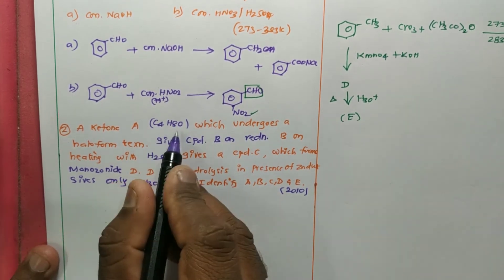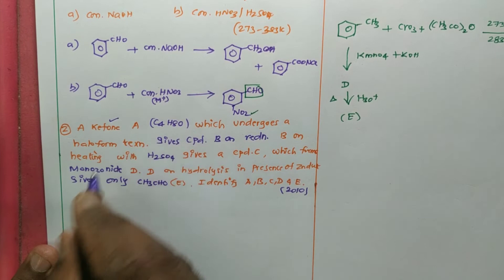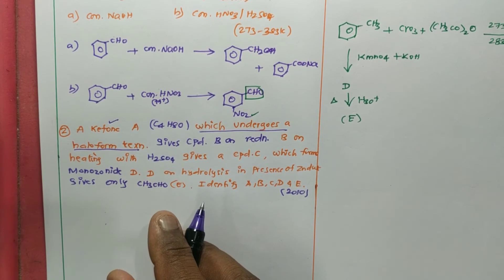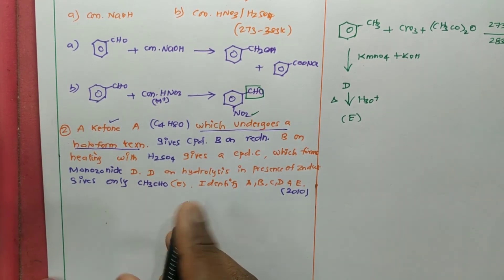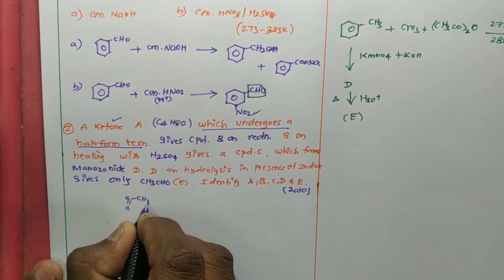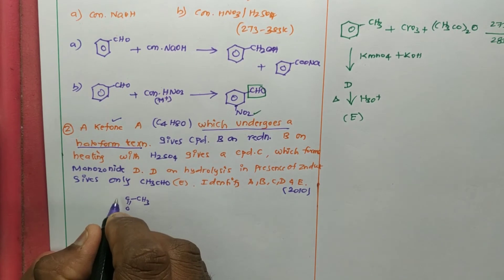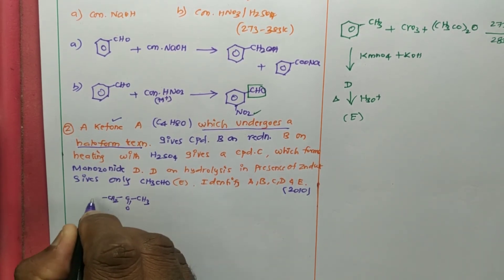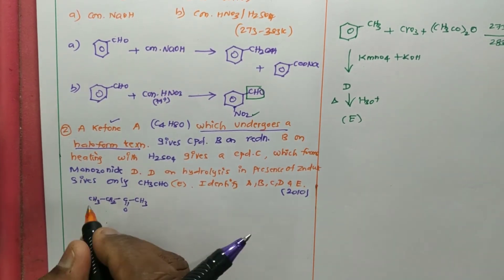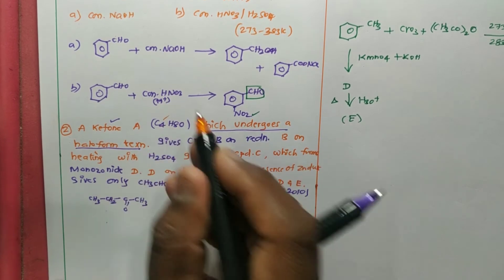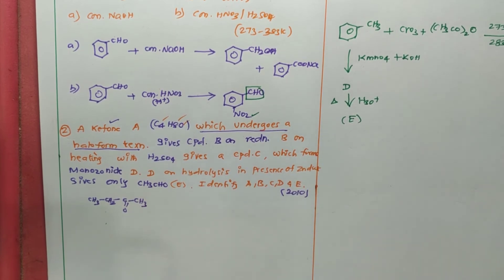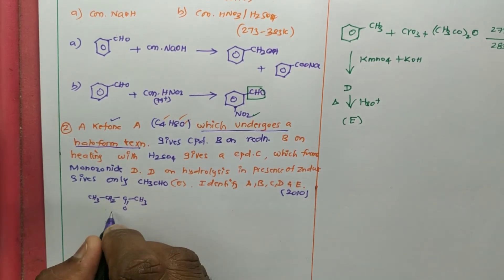Initially, we have to take C4H8O. They confirmed it is a ketone, and they gave the clue that it undergoes a haloform test, which confirms the presence of a COCH3 group. So I have written C double bond O and CH3 group. The remaining carbon atoms are 2 — that is CH2 and CH3. Now you can check: 4 carbon, 8 hydrogen, 1 oxygen — that matches C4H8O. That is how structure A was proposed. So this is structure A, which is methyl ethyl ketone (CH3-CO-CH2-CH3).